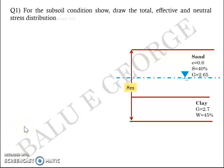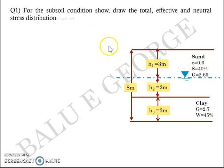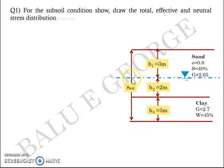Based on the theory portion discussed in the previous class, we'll try to solve this numerical problem. For the subsoil condition shown, draw the total, effective, and neutral stress distribution. There is a sand layer of 5 meter thickness (3 + 2 meters), and below it a clay layer of 3 meter thickness. The total thickness of the deposit is 8 meters.